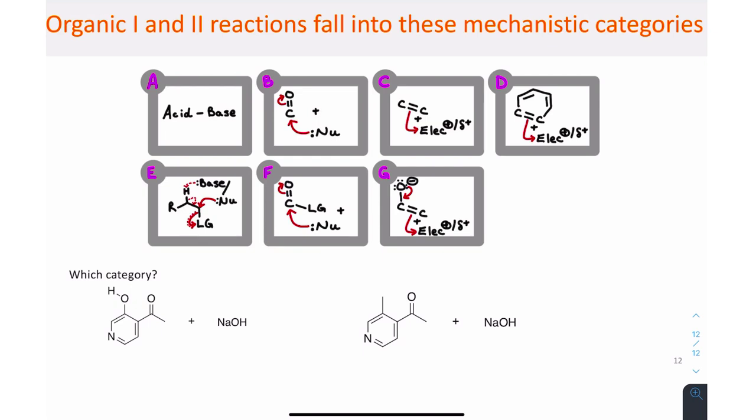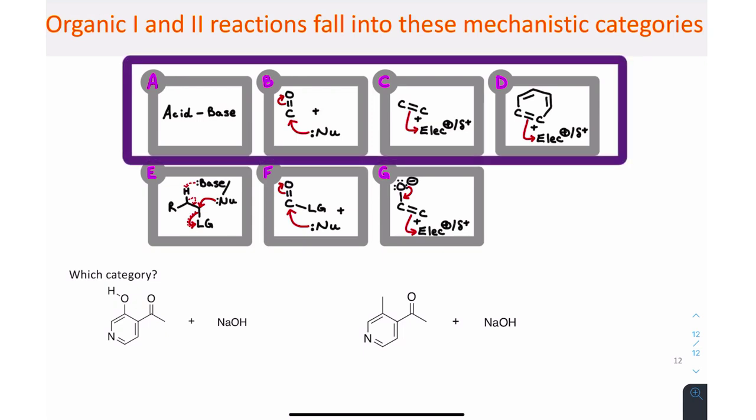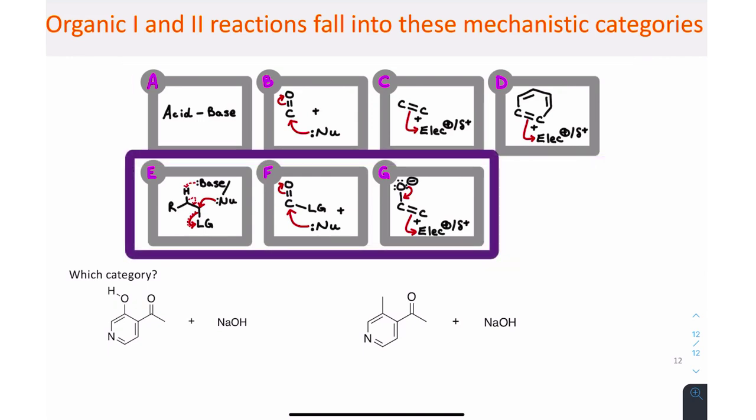Finally, all the reactions in organic chemistry 1 and 2 fall into seven mechanistic categories, arranged by the governing mechanistic step of that reaction. Organic chemistry 1 involves the first four, and organic chemistry 2 involves the last three.